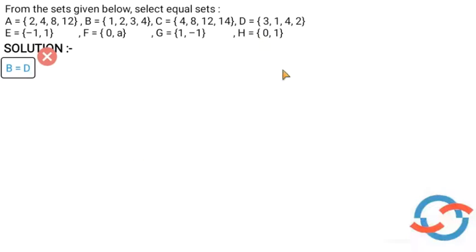C is equal to wherever the set is equal. Now we have D. D is equal to set of 3, 1, 4, 2.